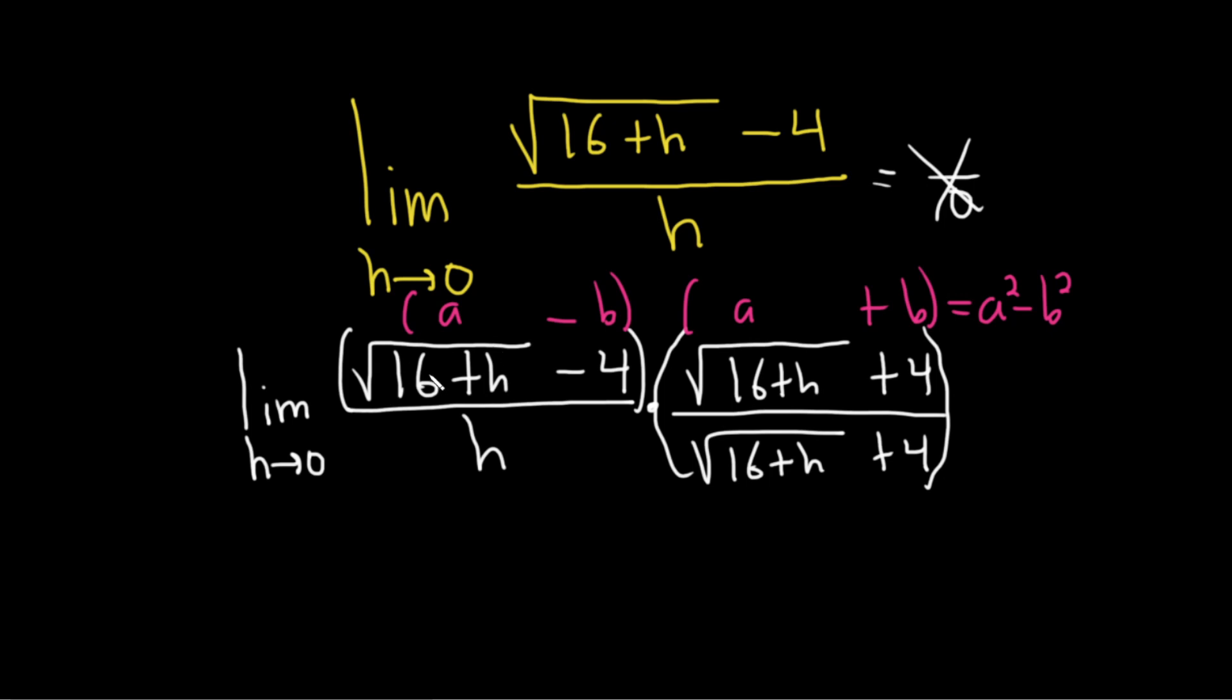So a minus b times a plus b is a squared minus b squared. So here you have your a. Here you have your b. Here you have your a. Here you have your b.